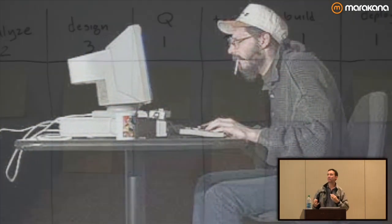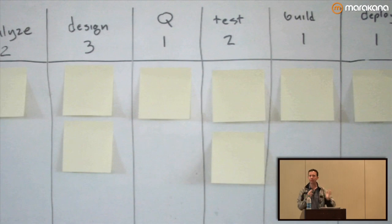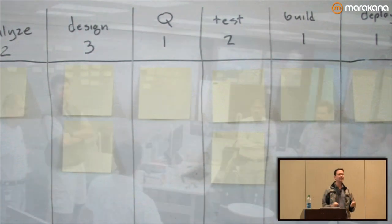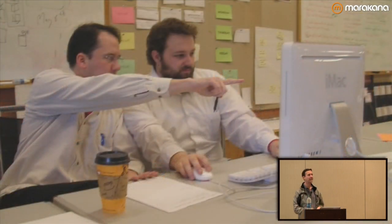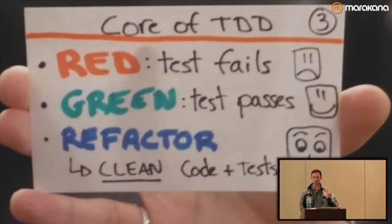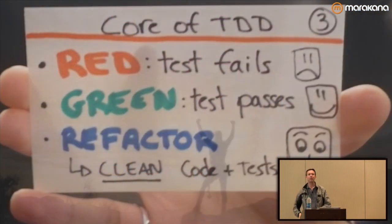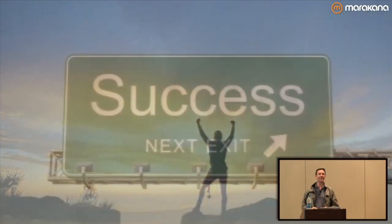And you're doing it all right. You're using Kanban to limit your work in progress so you don't have too many things going on at the same time. You're doing daily stand-up meetings, pair programming to make sure you write the best code you possibly can. You're even doing test-driven development — red, green, refactor. You're doing everything right. It's going to work out. Success is at hand.